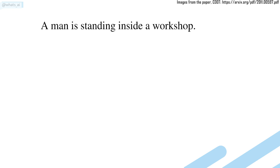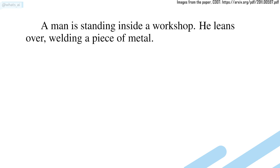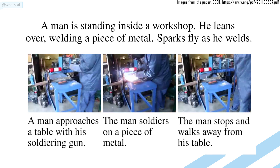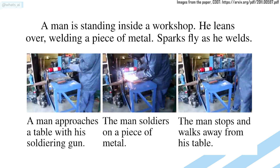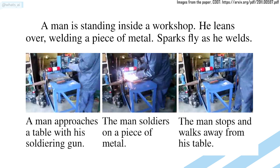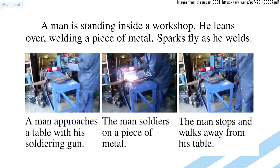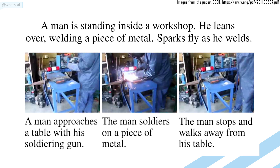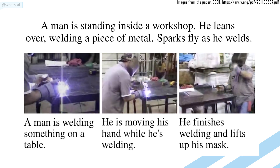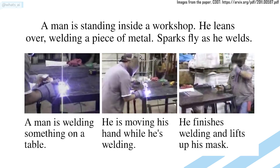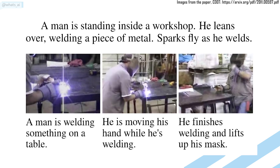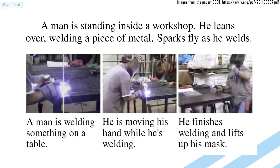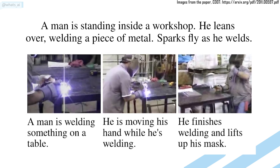This new model published at the NeurIPS 2020 conference uses transformers to generate accurate text descriptions for each sequence of a video, using both the video and a general description of it as inputs. It understands what's happening in the video at each clip, just like a human would. Let's see how they've achieved that.